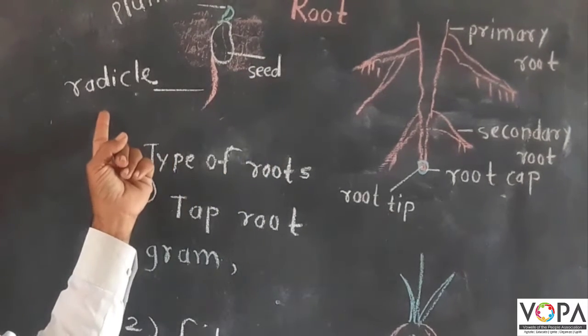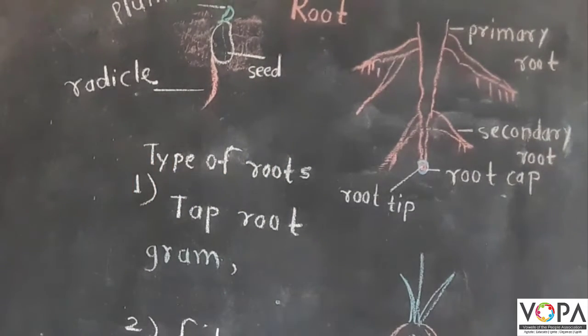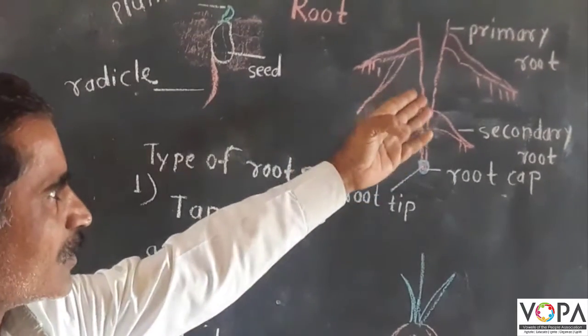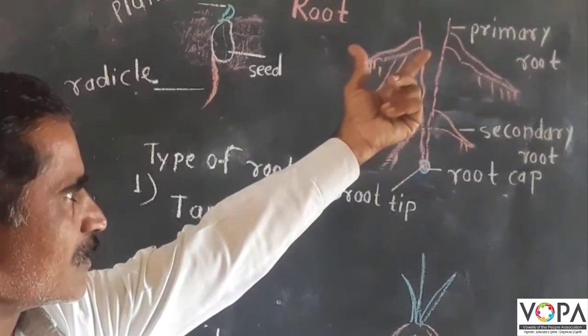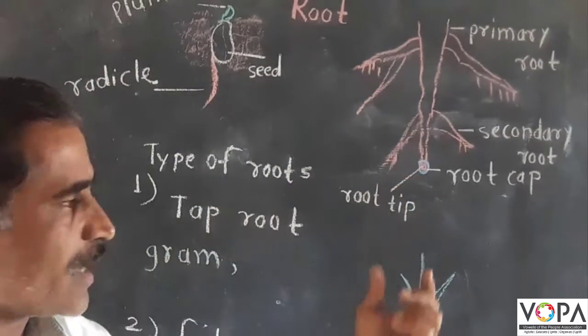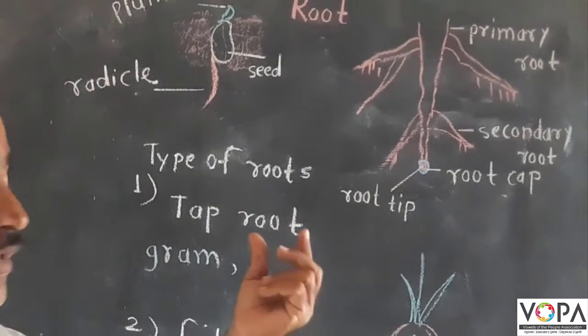The root grows from the radical. See here, the root grows to the ground and this root supports the plant.